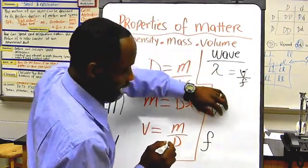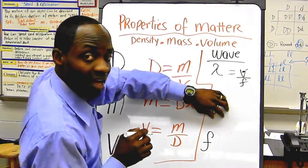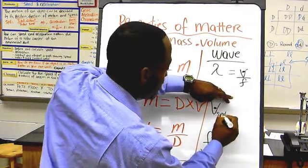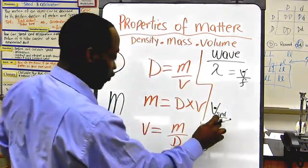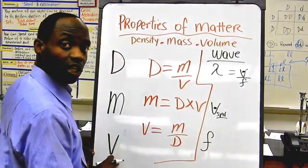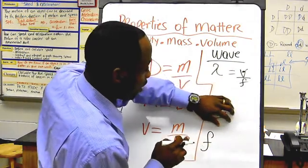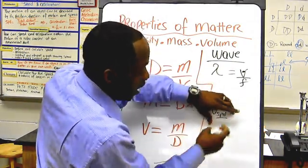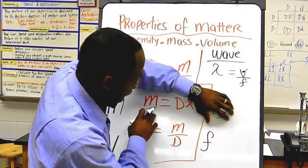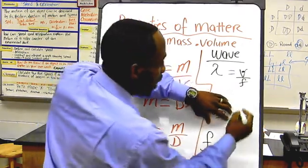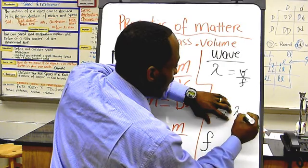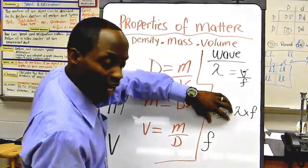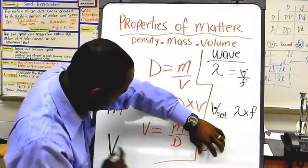Now, I need to find my speed or my velocity, and I'm going to put SPD under here to denote that it's different from volume. So you wouldn't confuse the two. So now, if I cover this up, and I have two other components open, which tells me V is in the middle, just like M, that means I have to multiply. So, lambda times F, or frequency. Same thing.